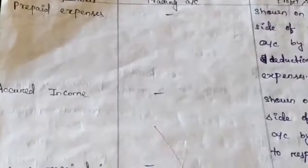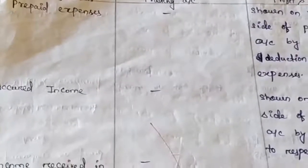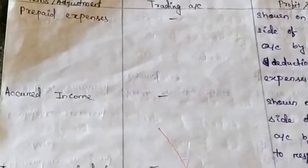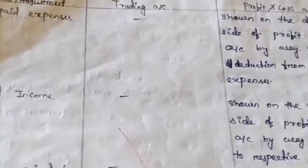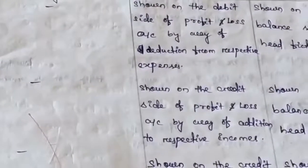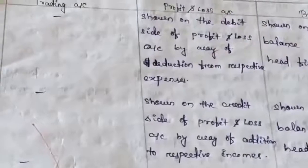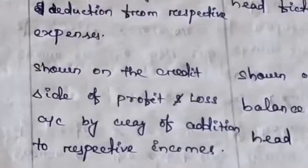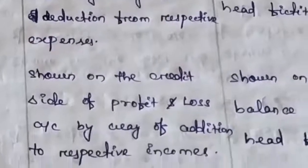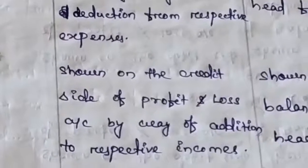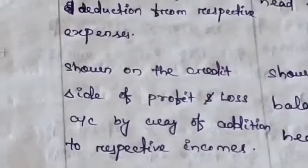The treatment of accrued income is the opposite of outstanding expenses. Since income is always indirect — sales is the only direct income and can never be accrued — the first treatment is shown on the credit side of the profit and loss account by way of addition to the respective income. For example, if you were to receive rent of 6,000 but received only 2,000, then 4,000 is accrued. You write rent as 2,000 in the inner column, then add accrued 4,000, giving 6,000 in the outer column.